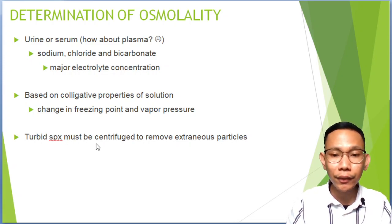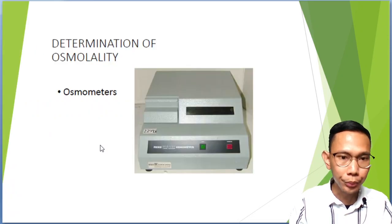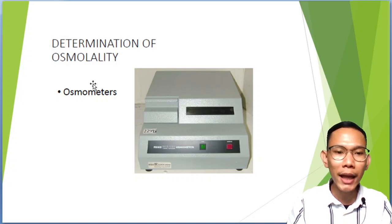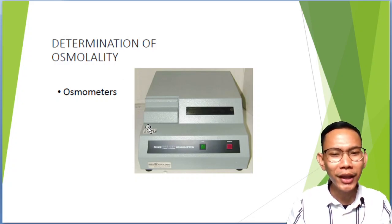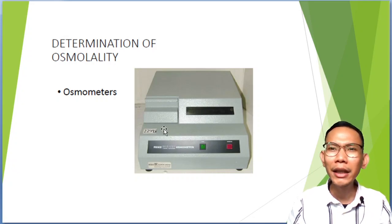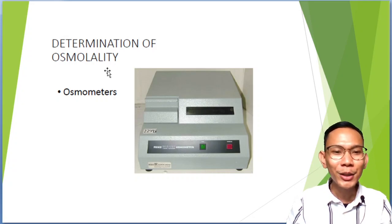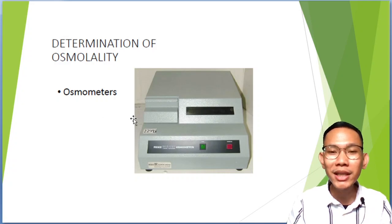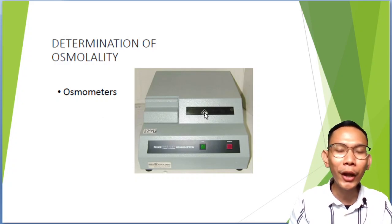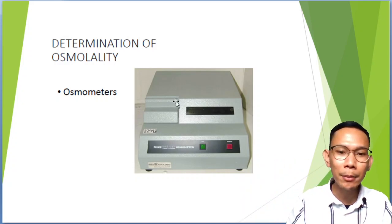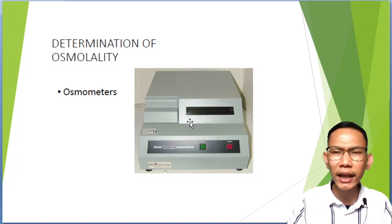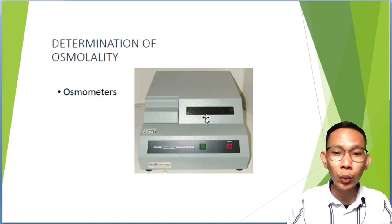Turbid specimens must be centrifuged to remove extraneous particles. The machine used to determine osmolality is called the osmometer. The osmometer follows the principle of freezing point depression. We collect either serum or urine — never plasma, because plasma is not recommended due to osmotically active substances present in anticoagulants that would give false results. The sample is placed in a cuvette, enters the machine, and is supercooled to approximately −7°C, after which the result is recorded.